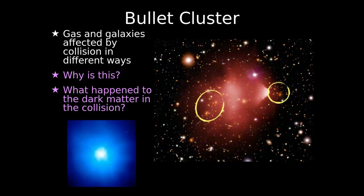We need to look at dark matter: has it interacted? Is it like the gas or like the galaxies? To do that, we need a technique to observe dark matter — which, as established, we can't directly observe. The only way we can observe it is by its gravitational effect. So we need another technique called gravitational lensing.